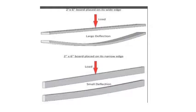When the beam is placed flat, IXX is BD cubed by 12 and since D is small, IXX is small. When the beam is turned with depth vertical, D is large and BD cubed is large, so IXX is large. Therefore, placing the beam with maximum depth results in less deflection. If the moment of inertia is high, the tendency of the cross section to deflect is very less, so it has more resistance to bending.